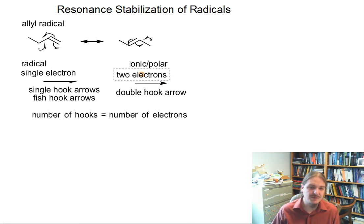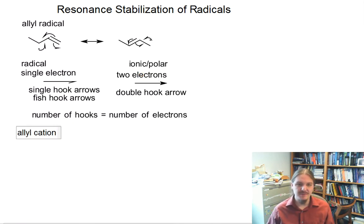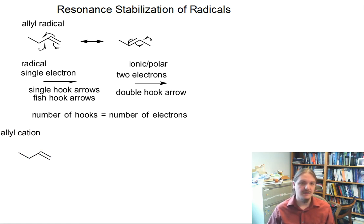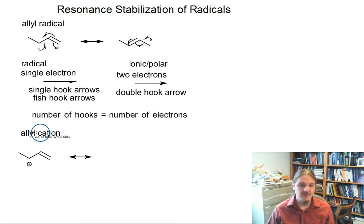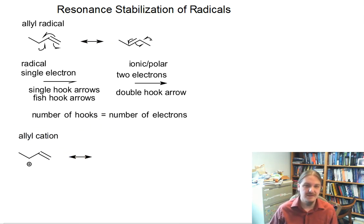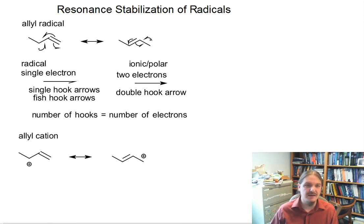This allyl radical resonance pattern is actually really similar to the resonance pattern for allyl cations. As you remember from allyl cations, the resonance pattern is that the double bond moves towards the cation, and the cation ends up at the opposite spot of the three-carbon allyl system.